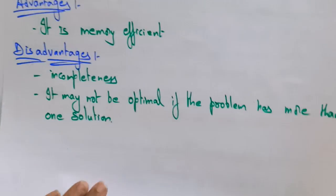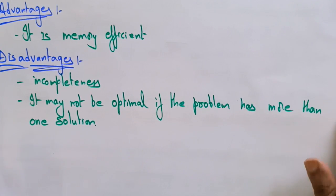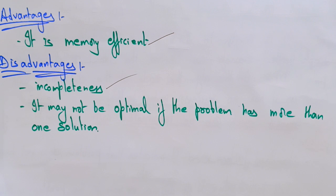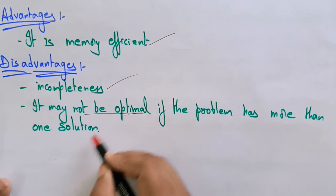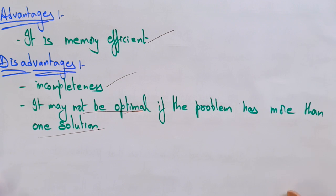The advantages of depth limited search: it is memory efficient. The disadvantages: incompleteness — if you didn't reach the goal node, you have to cut off and you are not able to move to the next successor because the limit is only up to that level. It may also not be optimal; if the problem has more than one solution, it may not find the optimal one.